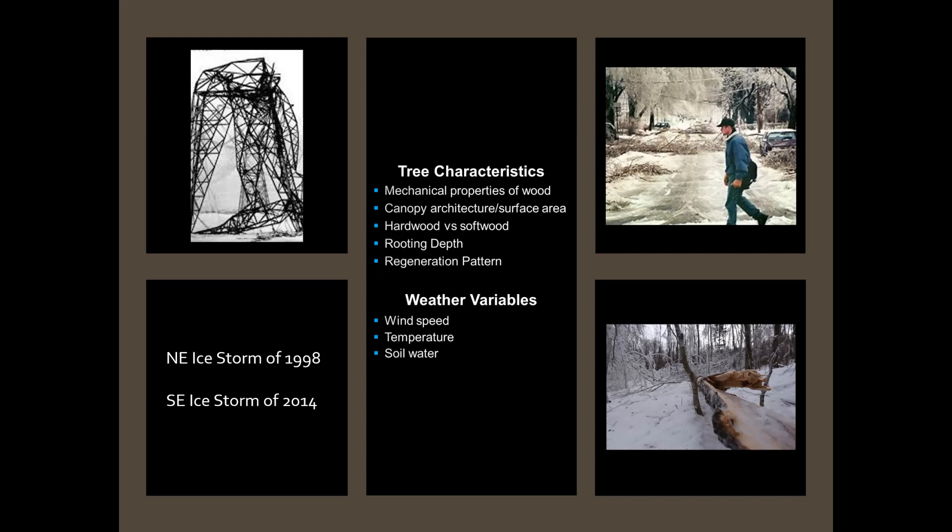Some tree characteristics are important. These include mechanical properties or the tensile strength of wood, canopy architecture including the surface area of branches and twigs, whether a tree is a hardwood or a softwood, its rooting depth — whether it's shallow rooted or deep rooted — and its regeneration pattern. We also know that weather variables like wind speed, temperature, precipitation, and soil water can all exacerbate the effects of icing.